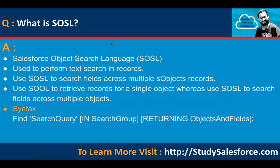Similar to SOQL, we also have SOSL — Salesforce Object Search Language. It is used to perform text searches on records. Use SOQL to retrieve records for a single object, whereas use SOSL to search fields across multiple objects. The syntax requires you to write FIND followed by a search query, then a search group, and then the returning objects and fields.